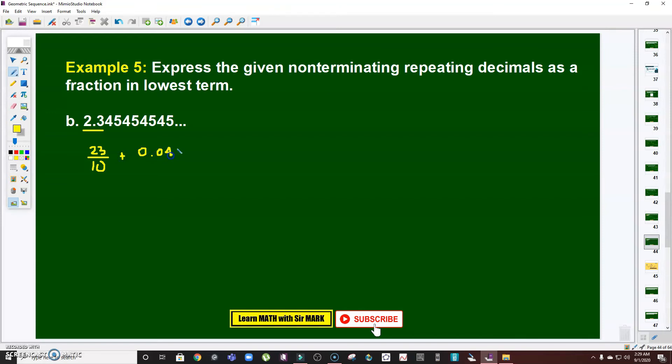Plus 0.045 plus 0.00045 and so on. Same procedure. Now, 23 over 10, so this 0.045 here is the same as 45 over 10 cubed.